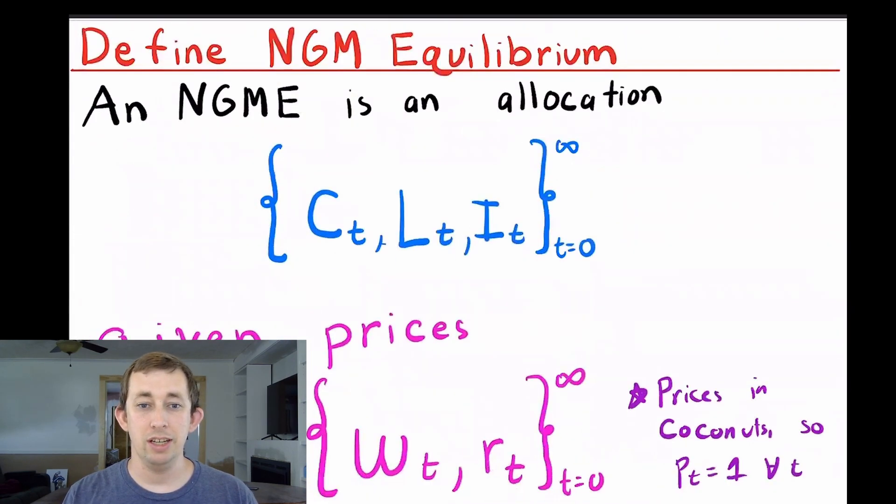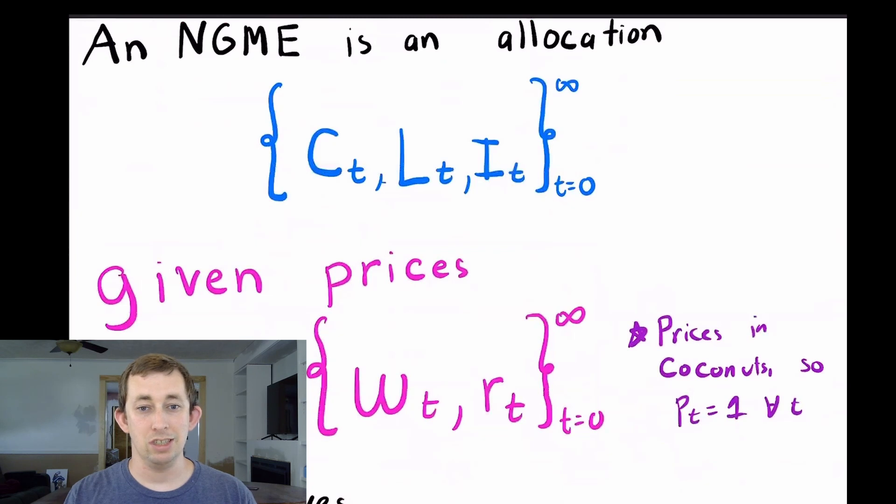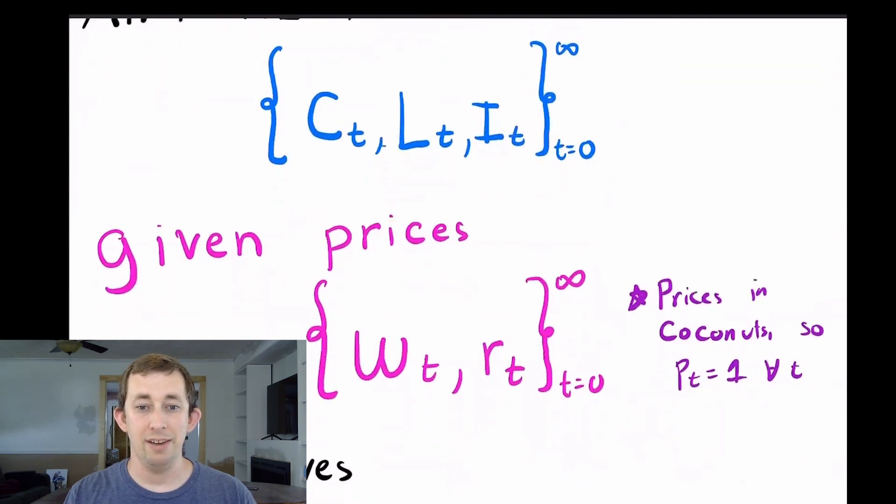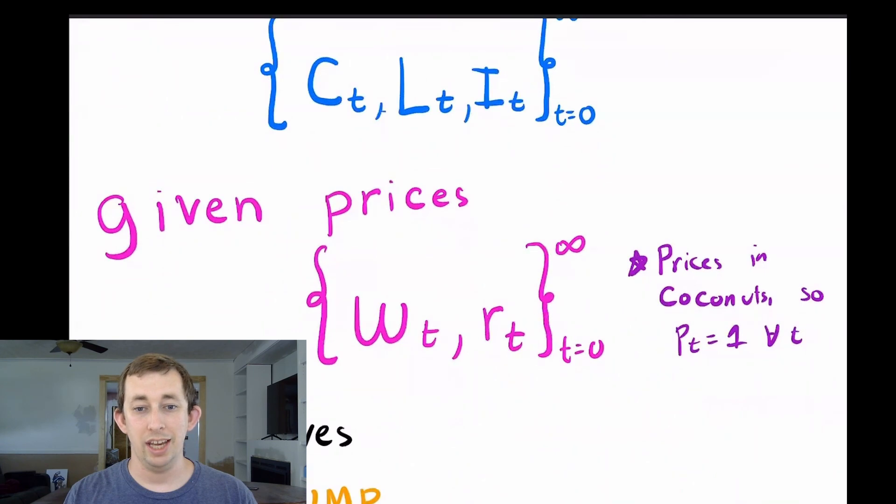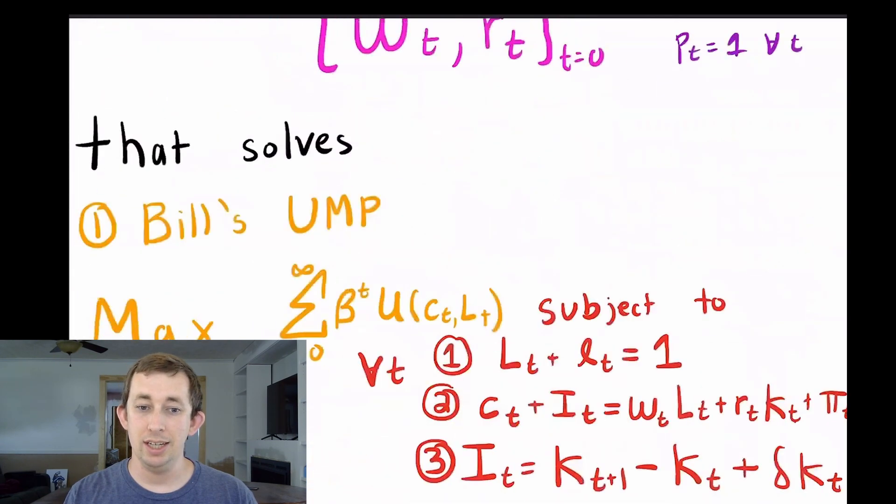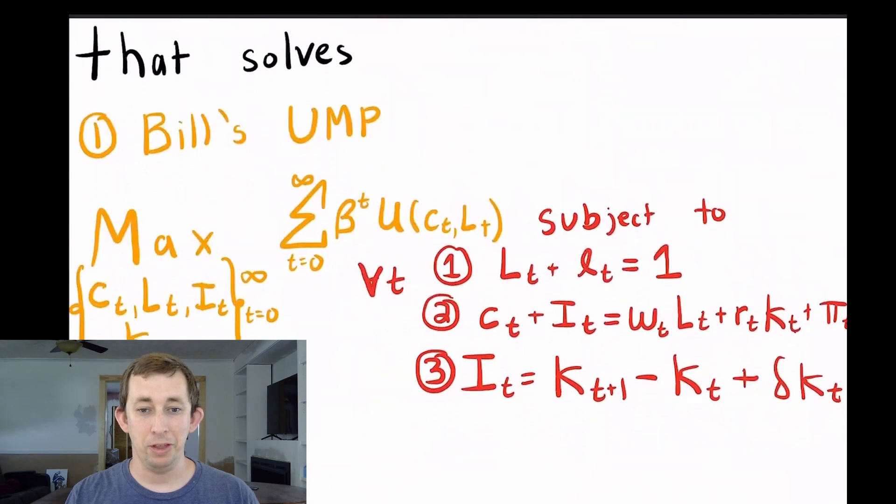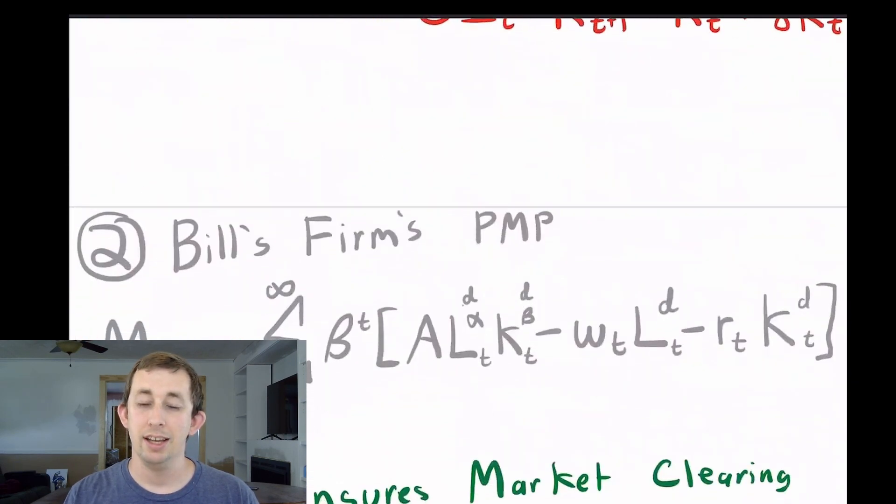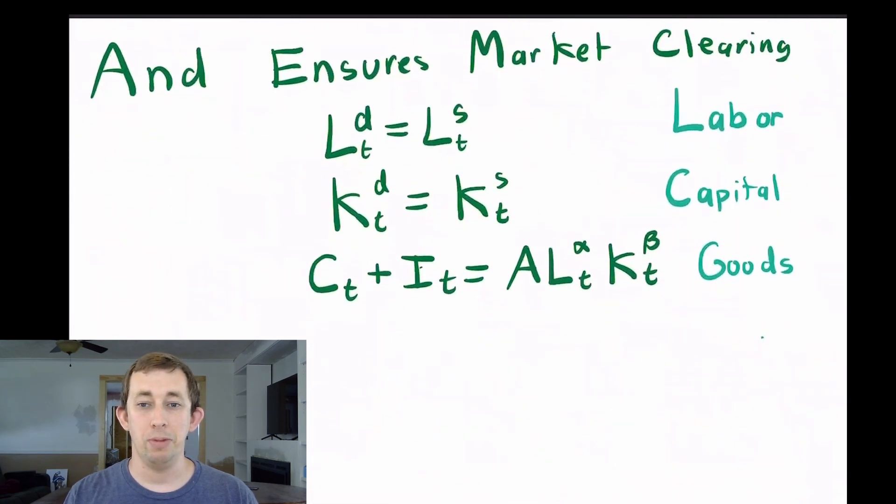Now the definition of the neoclassical growth model equilibrium is an allocation given prices that is optimal and satisfies market clearing. Bill gets to choose his consumption, his labor, and his investment every period. Given the prices, which are wages and the rental rate in every period, it's got to solve Bill's utility maximization problem with budget constraints and time constraints. It also needs to solve Bill's firm's profit maximization problem, and ensure market clearing. There are three markets in this world: the labor market, the capital market, and the goods market, as you see here.